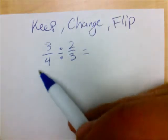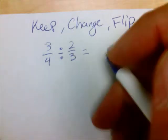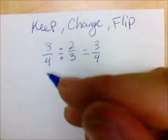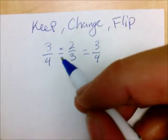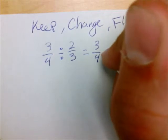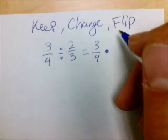What this means is keep my first number the same, three fourths. I did not do anything with it. I kept it. Change, change division to multiplication. All right, flip.